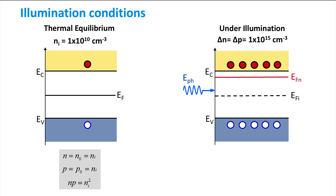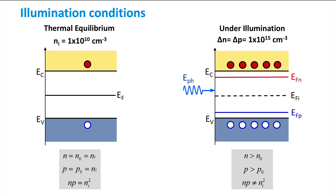In order to accurately determine the concentration of electrons and holes in a non-equilibrium state, we need two energy levels — one for electrons and one for holes. We call these two energy levels quasi-Fermi levels. EFn represents the quasi-Fermi level of electrons and EFp represents the quasi-Fermi level of holes. Going from equilibrium to non-equilibrium, instead of using one Fermi level, we use two quasi-Fermi levels. A consequence is that the mass action law no longer holds, and the product of electron and hole concentrations is no longer equal to Ni squared.